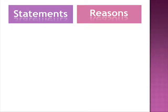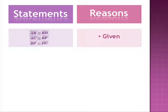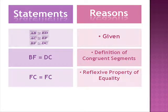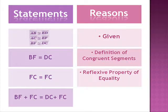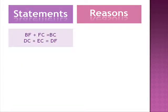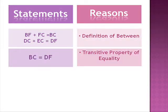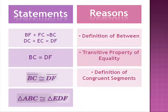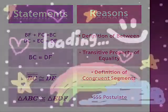Here is the two-column proof for the example. Given the conditions, BF equals DC by the definition of congruent segments. FC equals FC by the reflexive property of equality. BF plus FC equals DC plus FC by the addition property of equality. BF plus FC equals BC, and DC plus FC equals DF by the definition of betweenness. Therefore, BC equals DF by the transitive property of equality, BC is congruent to DF by the definition of congruent segments, and triangle ABC is congruent to triangle EDF by the SSS postulate.